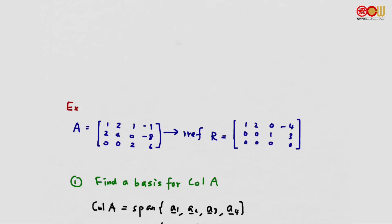For example, suppose A is this matrix and the reduced row echelon form of A, which we call R, is given like so.